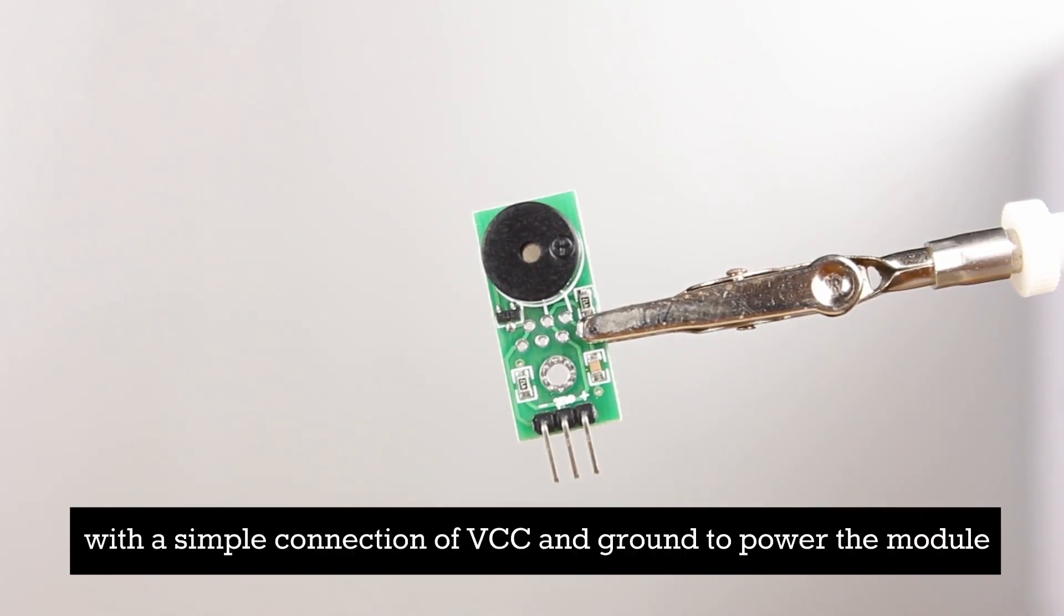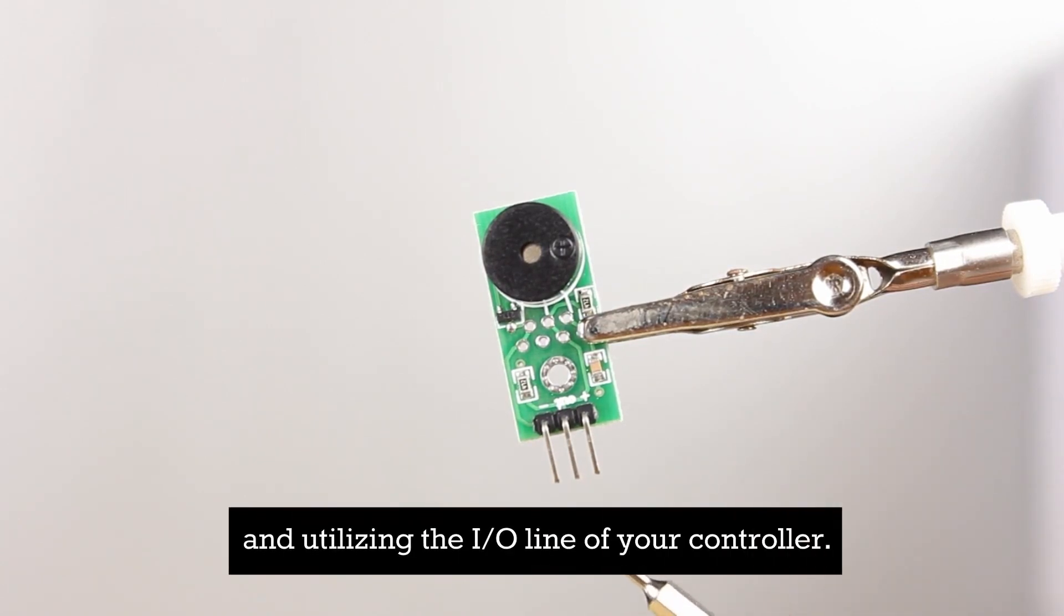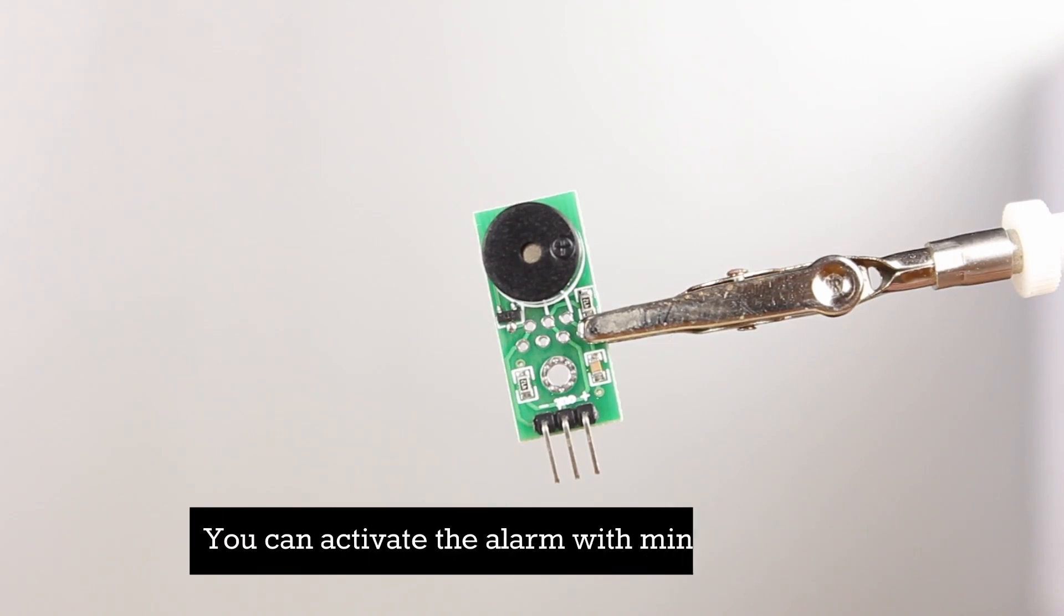With a simple connection of VCC and ground to power the module and utilizing the IO line of your controller, you can activate the alarm with minimal current.